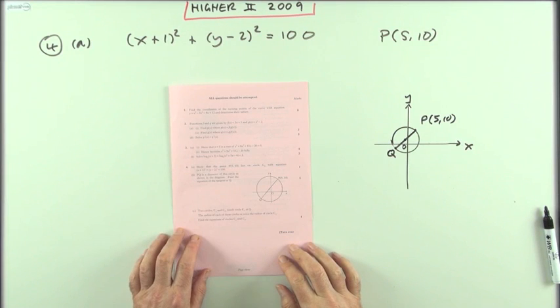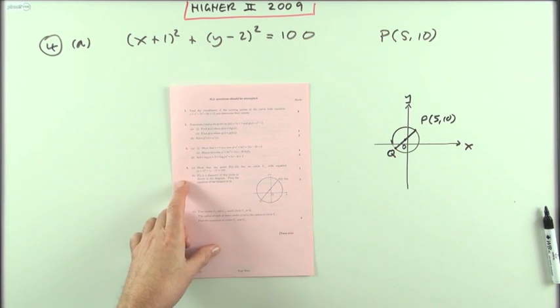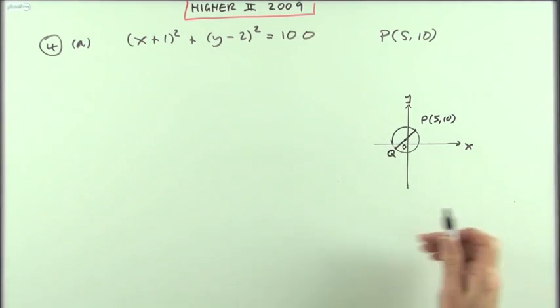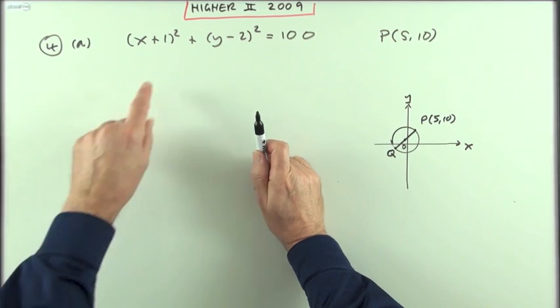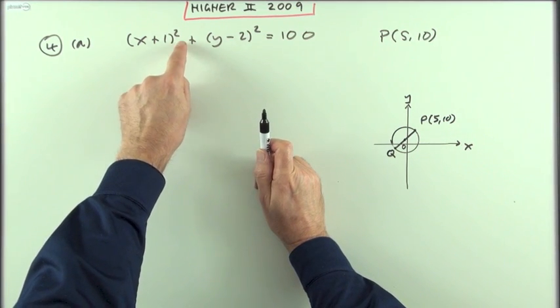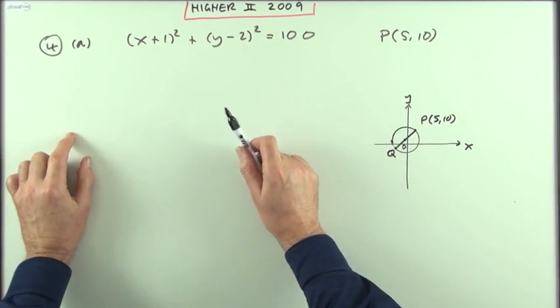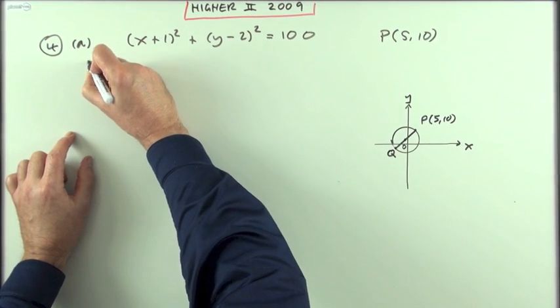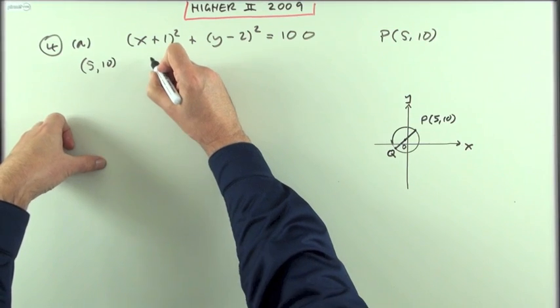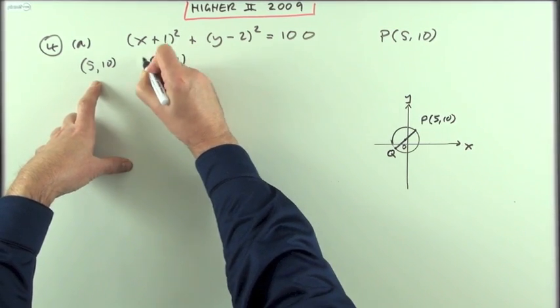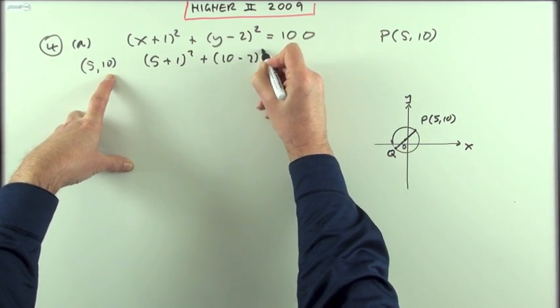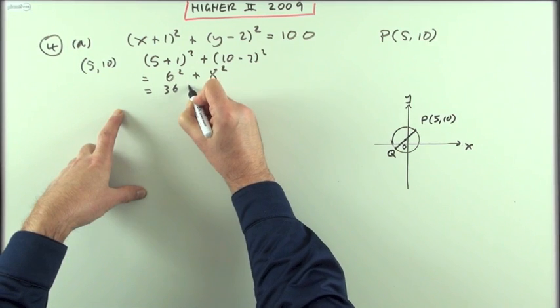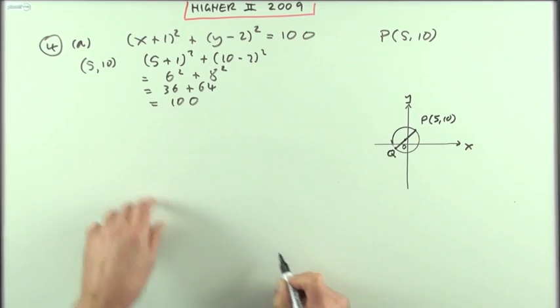Number four from the 2009 Higher paper two circles question. First part, just for one mark, show that this point actually lies in that circle. Well that's a coordinate equation - you only get to be on the graph if you obey that rule. If the x-coordinate plus 1 squared and the y-coordinate minus 2 squared comes to 100, so you just test that. If I put in 5, 10 what do I get? I'll have (5 + 1)² + (10 - 2)² which is 6² and 8² which is 36 and 64 which equals 100.